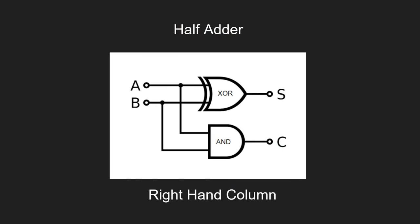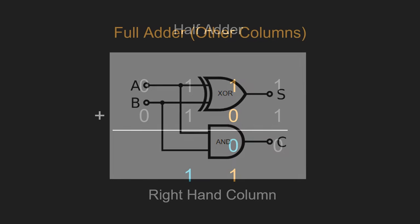And we said that this was achieved through the use of a half adder, which was a combination of an XOR and an AND gate with two inputs, A and B, and then the sum and the carry out. And that only worked for the right hand column.